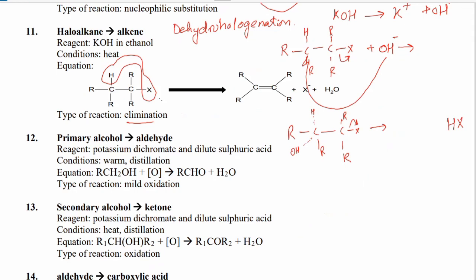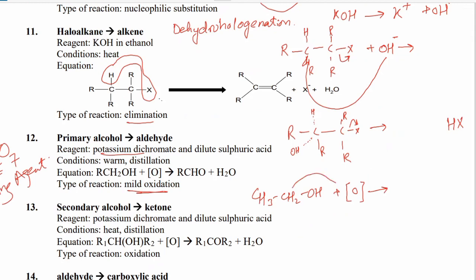Primary alcohol is converted into an aldehyde — this is a mild oxidation. CH₃CH₂OH is oxidized in the presence of potassium dichromate (K₂Cr₂O₇) as the oxidizing agent. It provides atomic oxygen; the two hydrogens on the carbon bonded to OH are removed along with the oxygen from OH to form H₂O, and we get CH₃CHO (ethanal).